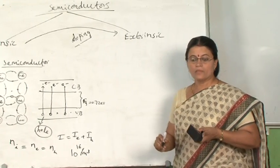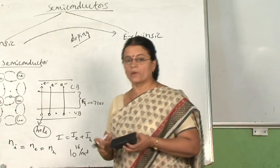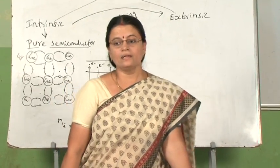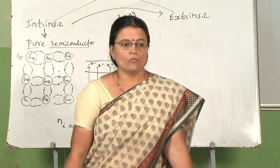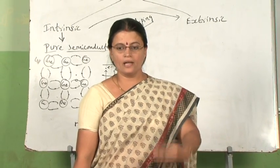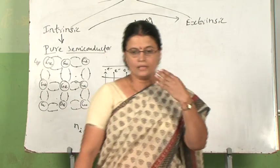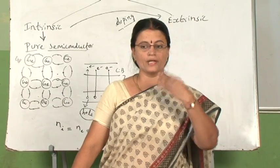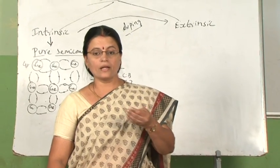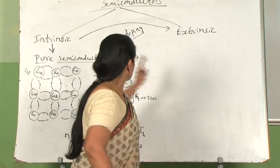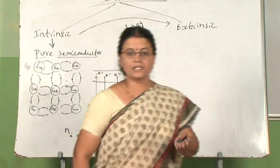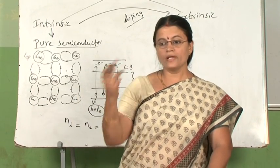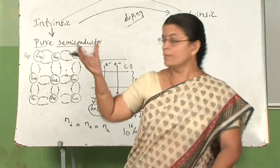Doping is defined as the process of deliberate addition of desired impurity atoms. It is deliberate because we choose which impurity atom to add so that we get our desired result. We add these impurity atoms to modify the electrical property of the pure semiconductor.